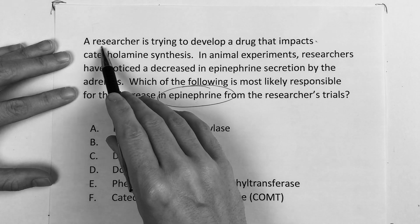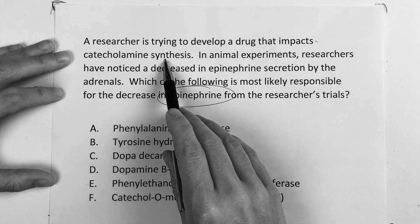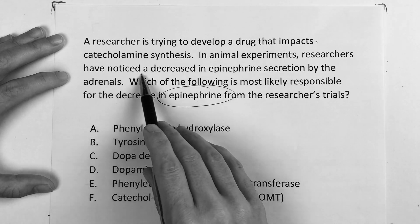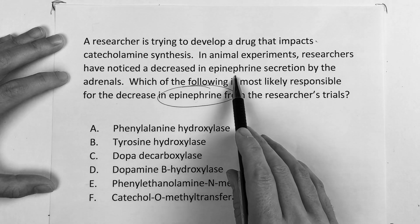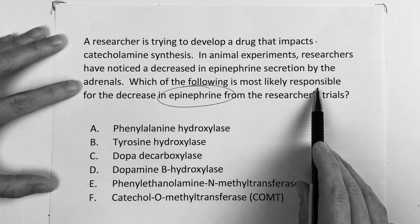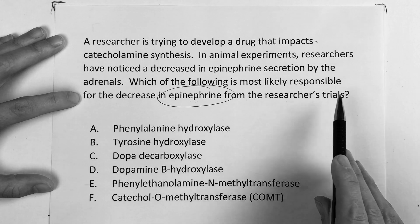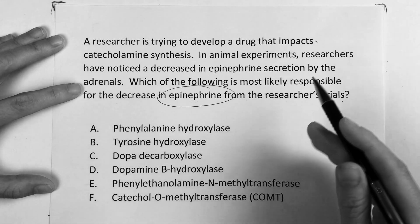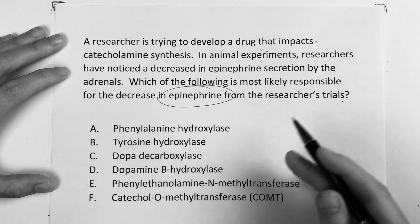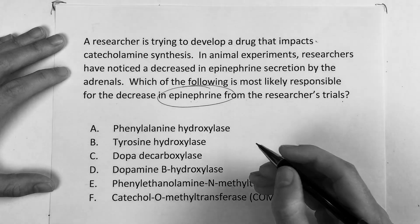The question reads: a researcher is trying to develop a drug that impacts catecholamine synthesis. In animal experiments, researchers have noticed a decrease in epinephrine secretion by the adrenals. Which of the following is most likely responsible for the decrease in epinephrine from the researchers' trials? So they want to know: do you know the mechanism, the enzymes, or even the rate-limiting step?